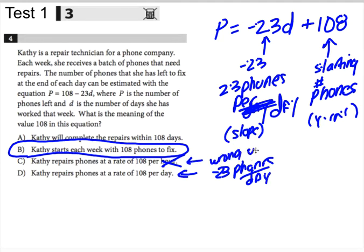Sorry, that's why I was thrown for a sec, right? And there's no way that the 108 has anything to do with days because days would be this D right here. So it's B, it is the y-intercept value.